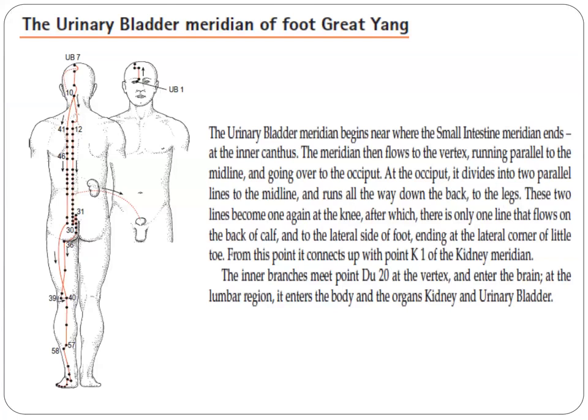The urinary bladder meridian of foot taiyang begins near where the small intestine meridian ends, at the inner canthus. The meridian then flows to the vertex, running parallel to the midline and going over to the occiput. At the occiput, it divides into two parallel lines to the midline and runs all the way down the back to the legs.